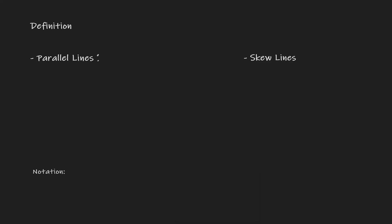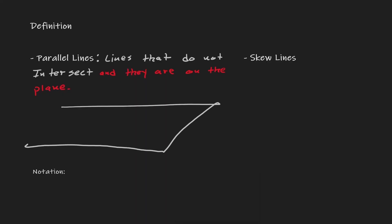Parallel lines are defined as lines that do not intersect and they are on the same plane. If we consider a plane and draw a line M, and then draw another line N that does not intersect line M, notice that these two lines are on the same plane and do not intersect — therefore, they are parallel.